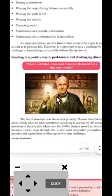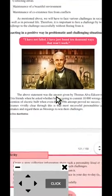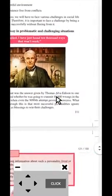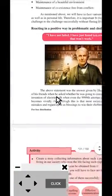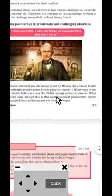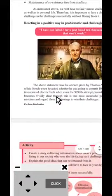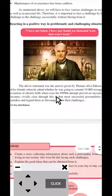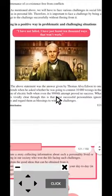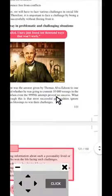The above statement was the answer given by Thomas Alva Edison to one of his friends when he asked whether he was going to commit thousands of wrongs in the invention of the electric bulb, when even the 9,999th attempt proved no success.